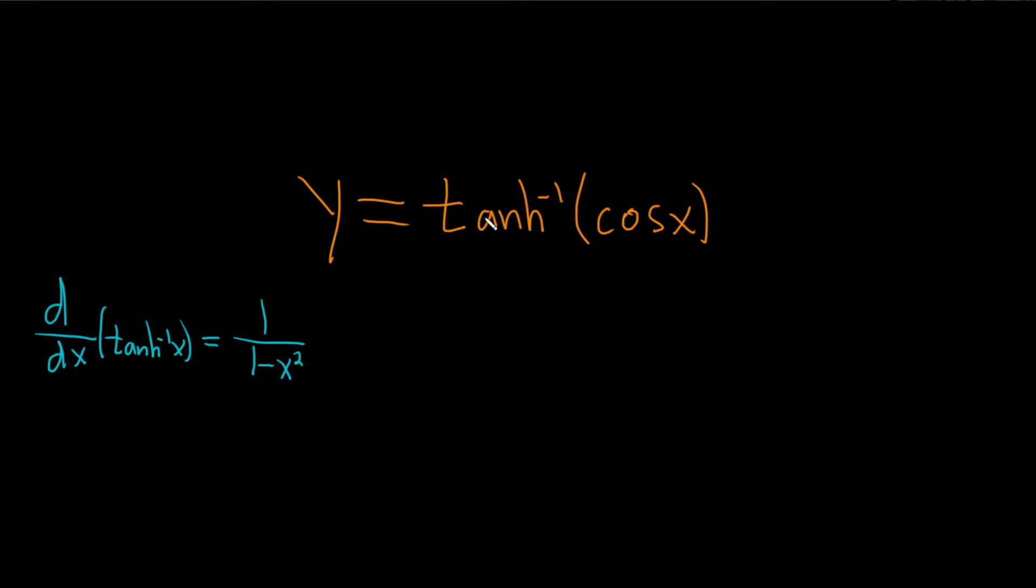So here we have tanh inverse of cosine, so we'll have to use the chain rule. So dy dx, we'll start by taking the derivative of the outside function, which is tanh inverse, so that's this formula here, and we'll leave the inside untouched.